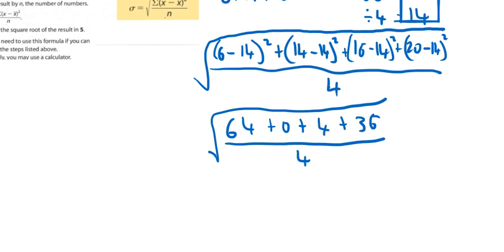So when you add these together you get 104 on top. So 104 then you must divide it by 4. So that would be 26. So I must find the square root of 26 then.